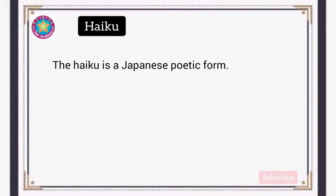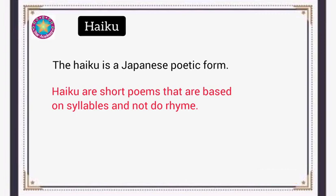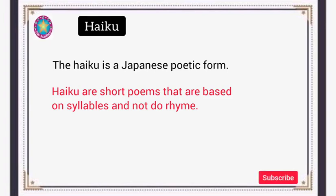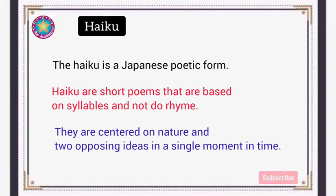The Haiku is a Japanese poetic form and it always consists of only three lines. These poems are short and are based on syllables and not on rhyme. The pattern of these Haiku poems will be covered in this video lesson. Haiku are centered on nature and two opposing ideas in a single moment in time.